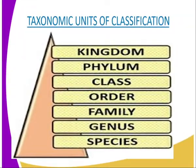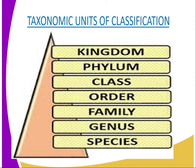In animals, except human beings, the term breed is used, while in plants, the term variety is preferred. Living organisms are assigned scientific names in the Latin language. Where Latin equivalents are not available, the existing names are Latinized. In scientific naming, an organism is given both the specific name and the genus name, whereby two names are required.